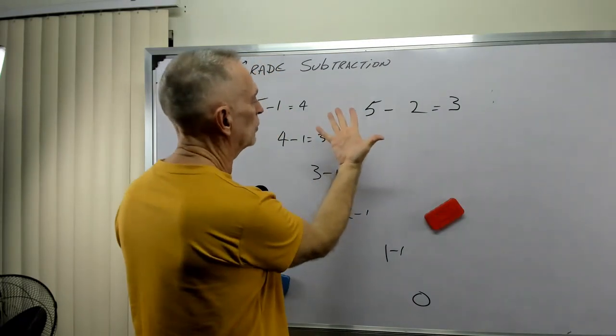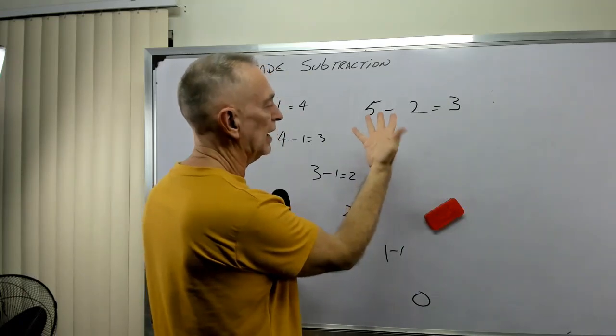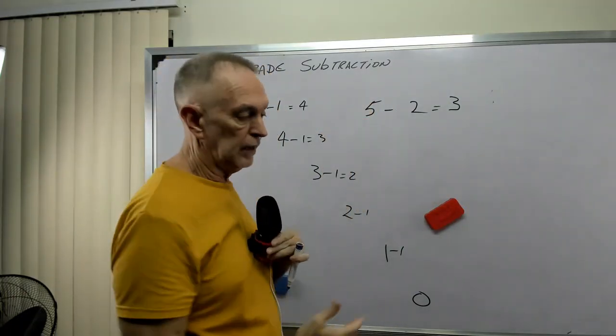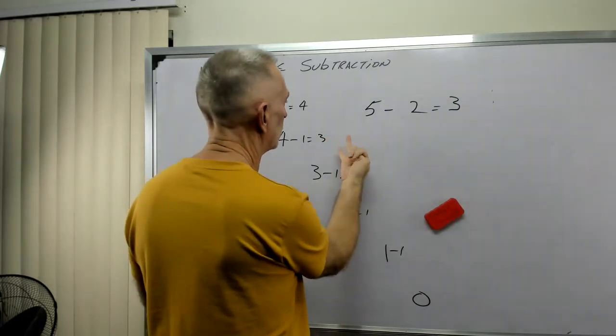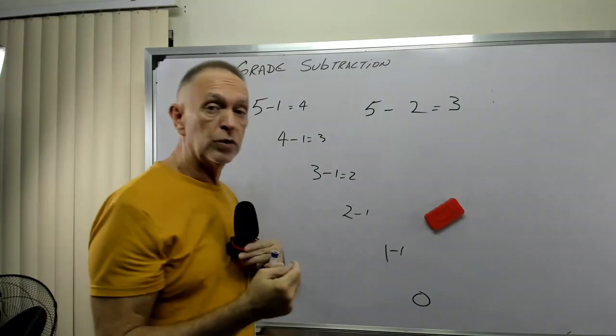Five minus one. One, two, three, four. So I subtracted the one. Five minus three. So one, two, three, that gives me two. So you can do it that way. You can count the reduction.